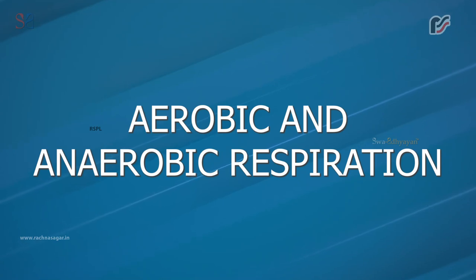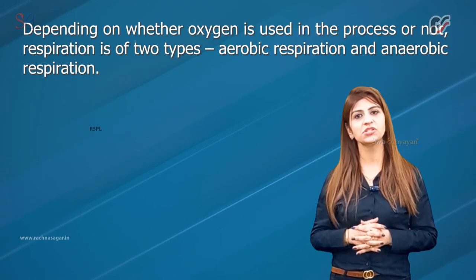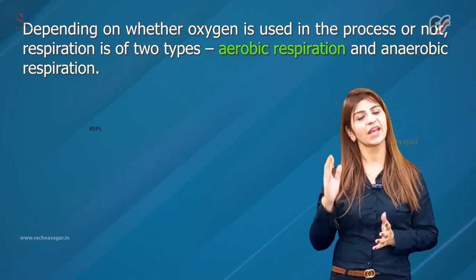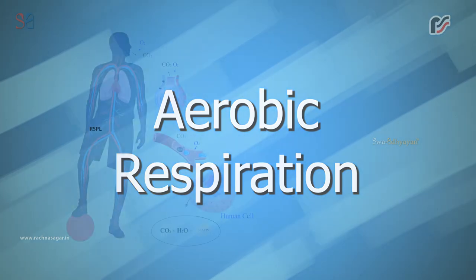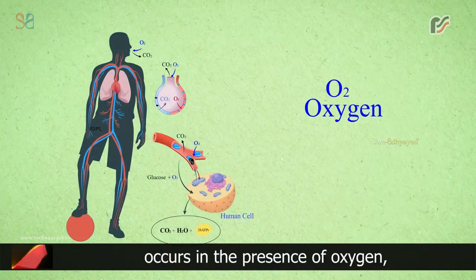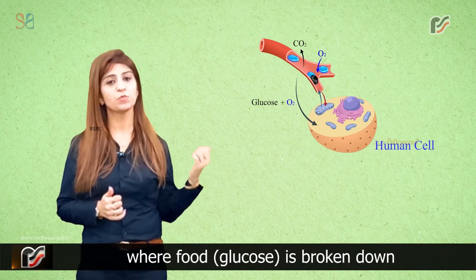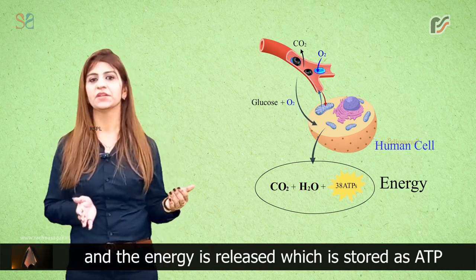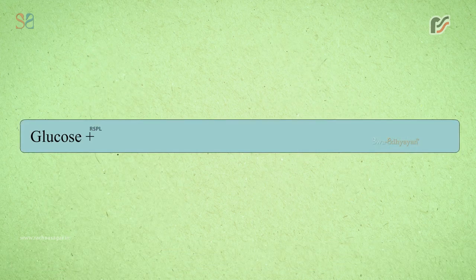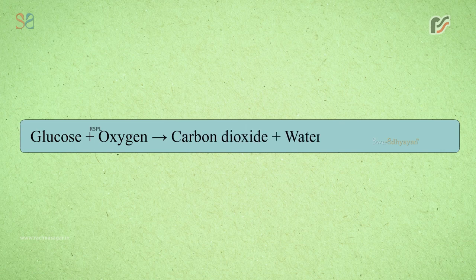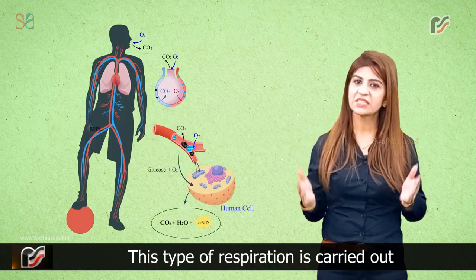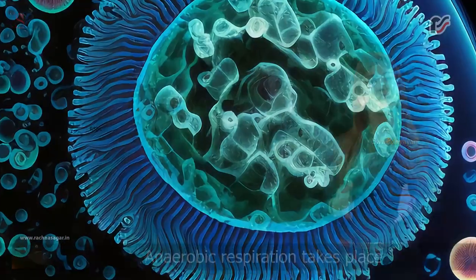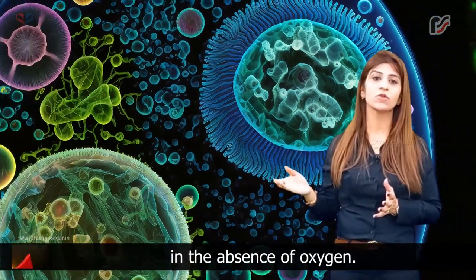Aerobic and anaerobic respiration: Depending on whether oxygen is used in the process or not, respiration is of two types — aerobic respiration and anaerobic respiration. Aerobic respiration occurs in the presence of oxygen, where food (glucose) is broken down into carbon dioxide and water, and energy is released which is stored as ATP energy-carrying molecules. The equation is: glucose + oxygen → carbon dioxide + water + energy (38 ATPs). This type of respiration is carried out in most plants and animals.